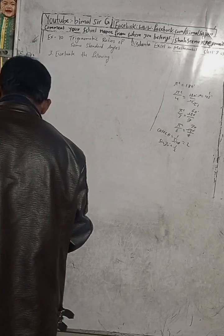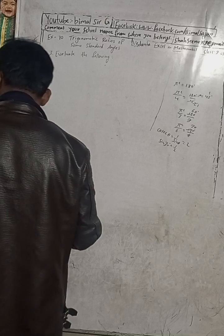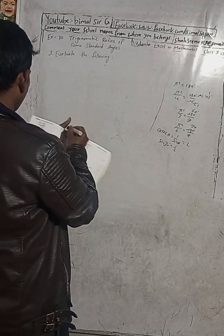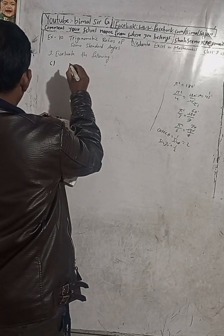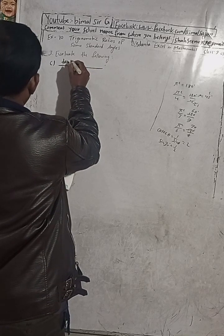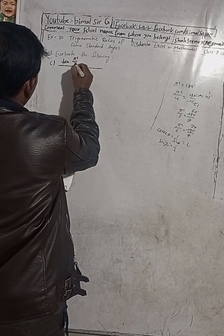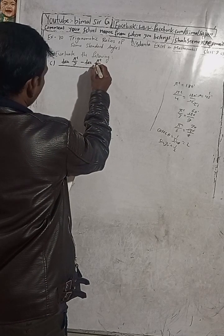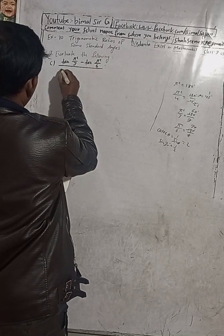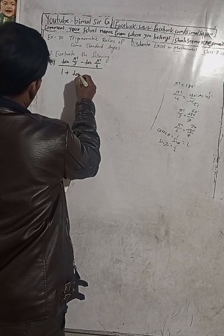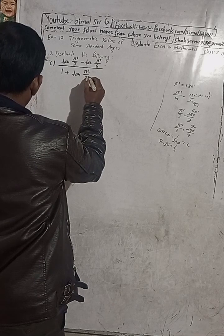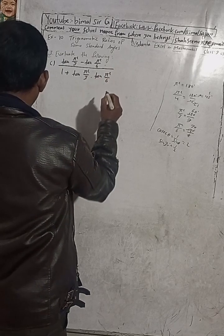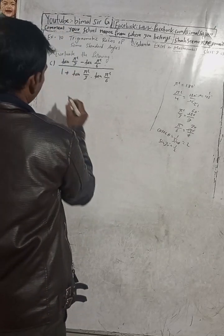Now part (c). The question is: [tan(π/3) − tan(π/6)] divided by [1 + tan(π/3)·tan(π/6)].